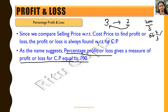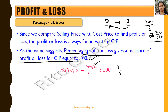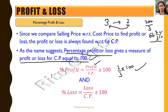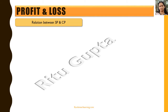So when we say profit percentage or loss percentage, we are talking about the profit or loss when the cost price is 100. Percentage profit = (Profit / CP) × 100, and percentage loss = (Loss / CP) × 100. When we say only profit and loss, we are talking about the absolute value of the profit or loss.